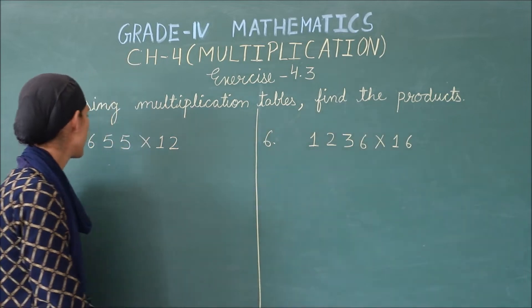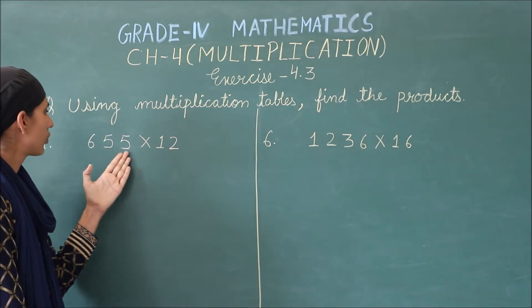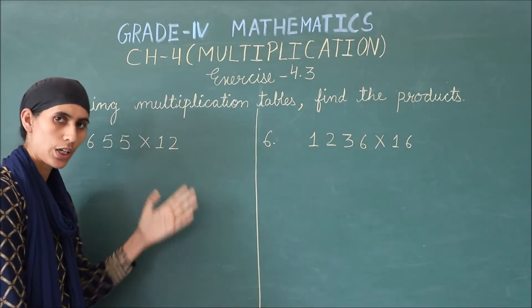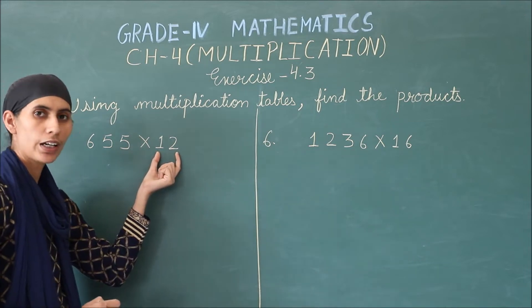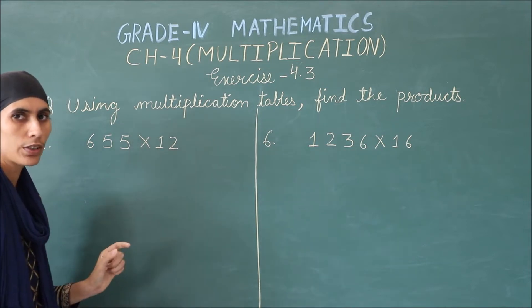So, your A part is, 655 multiplied by 12. So, you have seen, your multiplier is 2 digits. So, we will solve this in two lines.